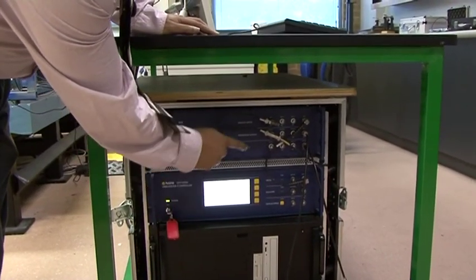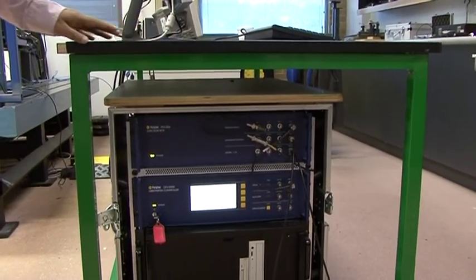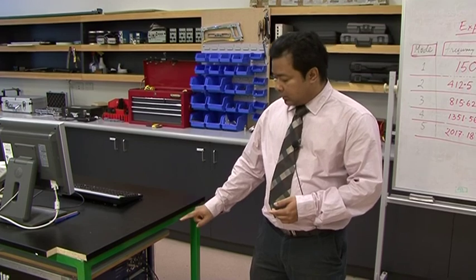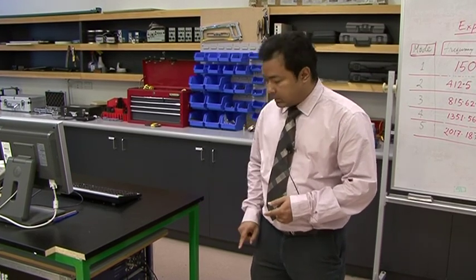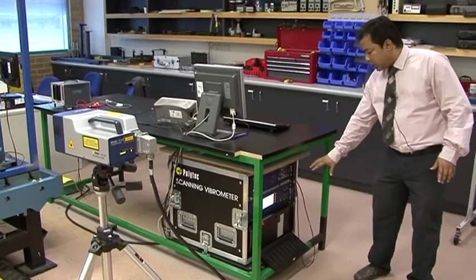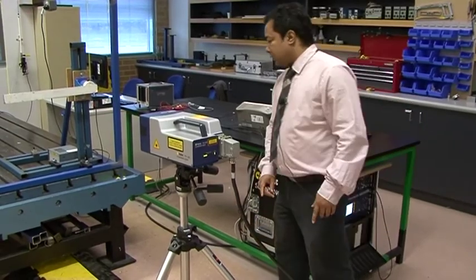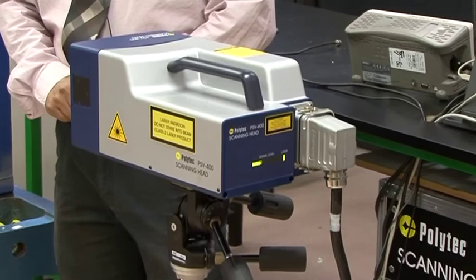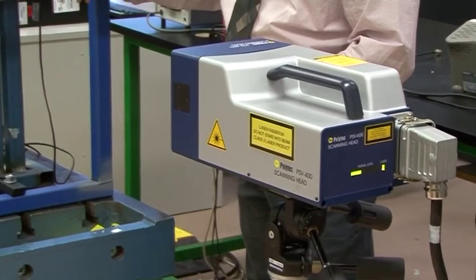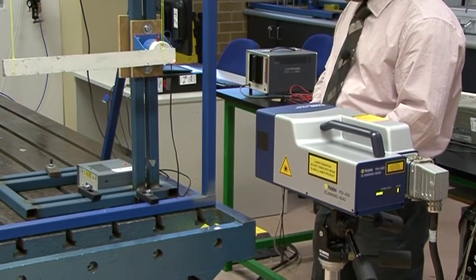The power amplifier input is coming from the signal generator. You can see the signal generator has two racks and this cable is connected going to that amplifier. We need this signal generator to work along with a laser head. The laser head is connected with the software-controlled hardware through a cable. This is the Polytec scanning laser head.